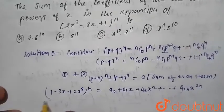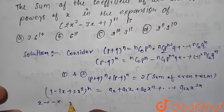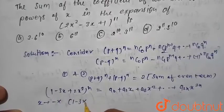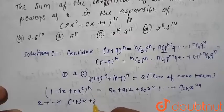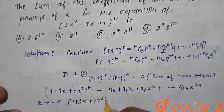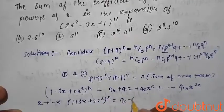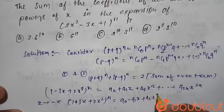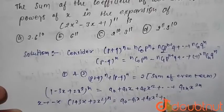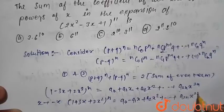If we replace x by (−x) in this equation, we write: (1 + 3x + 2x²)^n = a0 − a1·x + a2·x² + ... + a2n·x^(2n).